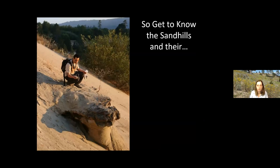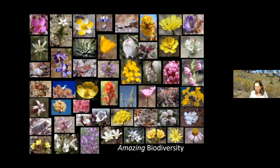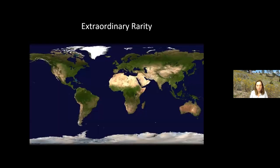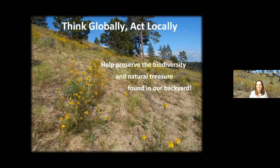I probably told you way more than you want to hear in one night, but hopefully I've encouraged you to continue all your work and get to know the Sandhills. Just to recap: their high rates of endemism — the species we know and the species we haven't even described yet — their inordinate diversity with lots of species, and their really extraordinary rarity. The Galapagos are very near and dear to everyone — they're 1.7 million acres. The Sandhills originally 7,000 acres, and we're down to about three or four thousand. They ought to be one of the rarest ecosystems. Thank you for all your work — think globally, act locally, and do what you can as part of your docent work and other activities at the park.